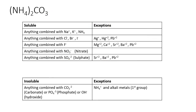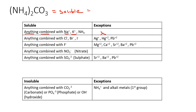For NH4CO3: anything combined with Na, K, or NH4 is soluble with no exceptions. You might say the CO3 rule makes it insoluble, but if you look at the exceptions, NH4 is listed as an exception. So CO3 is insoluble except when it's with NH4 — meaning this substance is soluble and can be pulled apart.